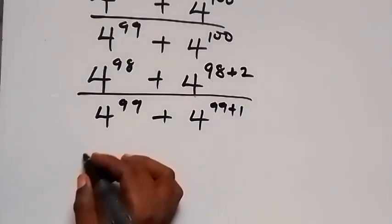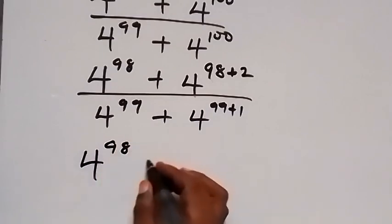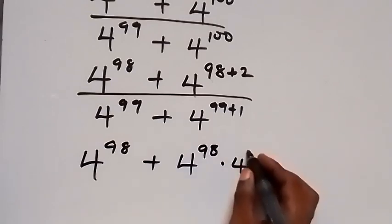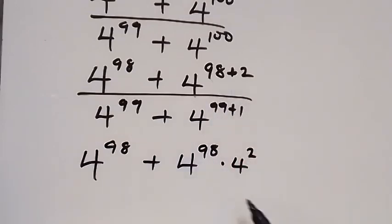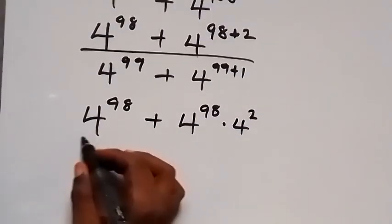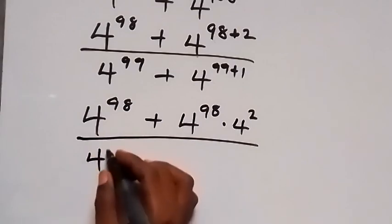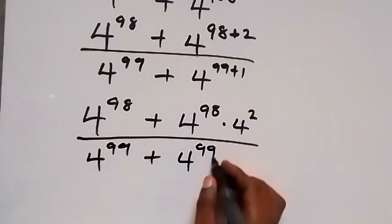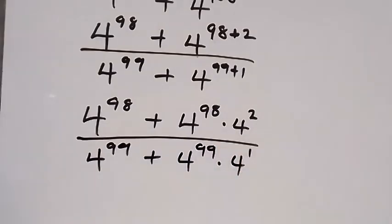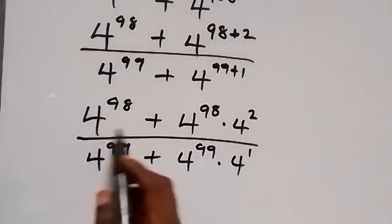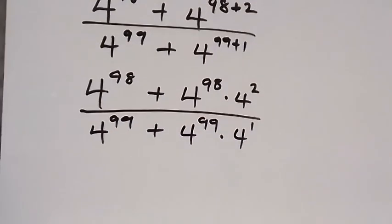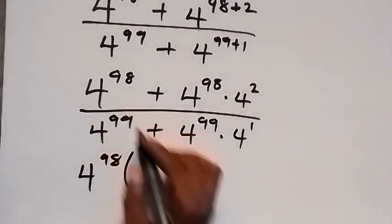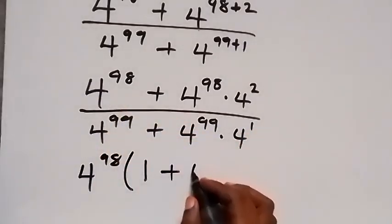Applying the law of indices again, this becomes 4 raised to power 98 plus 4 raised to power 98 times 4 raised to power 2 in the numerator. In the denominator we have 4 raised to power 99 plus 4 raised to power 99 times 4 raised to power 1. In the numerator, we factor out 4 raised to power 98, giving 4 raised to power 98 multiplied by 1 plus 4 squared.